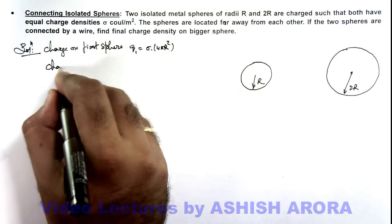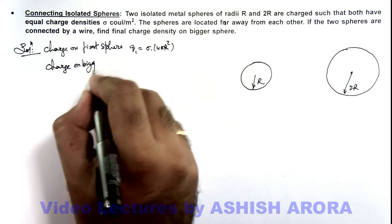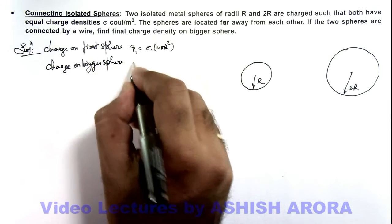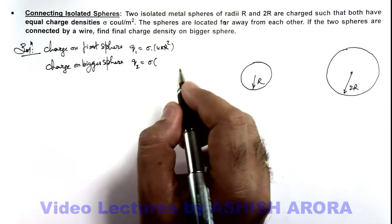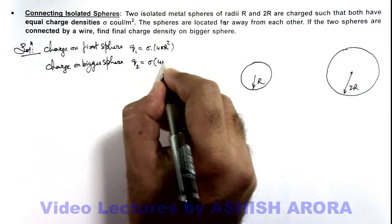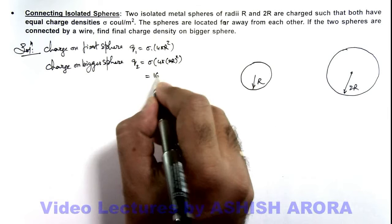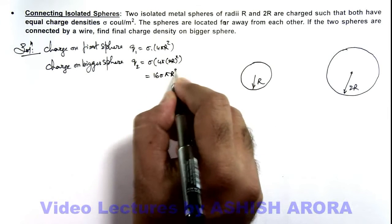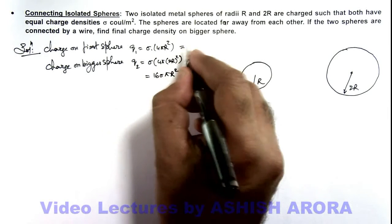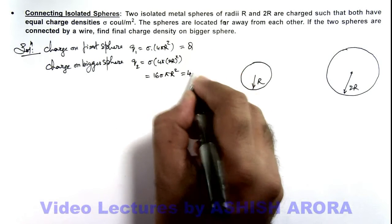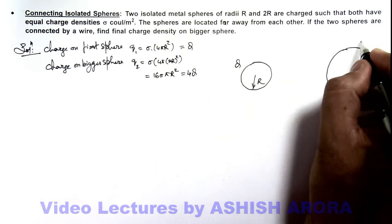And if we calculate the charge on the second one, which is the bigger sphere, that can be taken as Q2, which is sigma multiplied by 4π(2R)². So this is 16σπR². You can see this is 4 times the charge of the first sphere. Say from the first sphere we consider charge to be Q, on the second we can take it as 4Q. So on this charge is Q, here charge is 4Q.